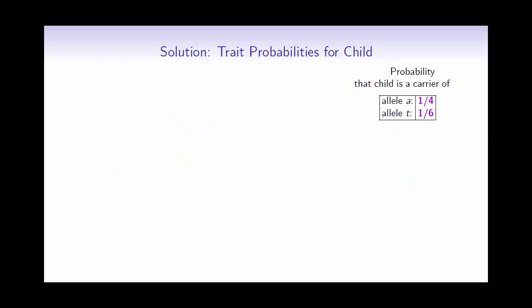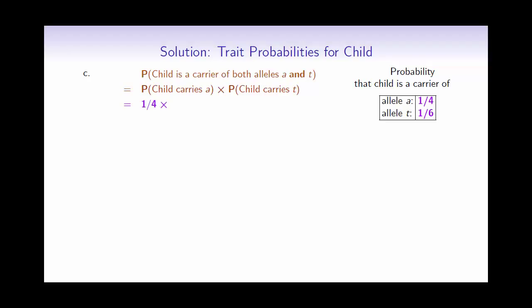For the remaining questions, we can use what we have already calculated. To find the probability that the child is a carrier of both Tay-Sachs and cystic fibrosis, these are actually independent events, so we use the product rule and simply multiply the two probabilities together. The final answer is one over twenty-four.